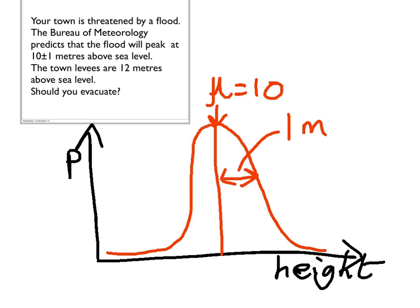If disaster is going to strike, that's going to require us to go over 12 metres, so that's somewhere about here. That's 2 standard deviations away from the centre. Basically any value upwards from there is going to spell watery doom for your town. So the probability of that happening is going to be the integral of the area under the Gaussian curve from 12 and upwards.